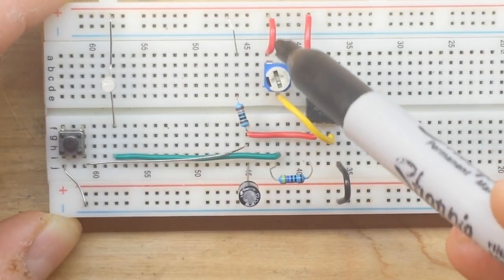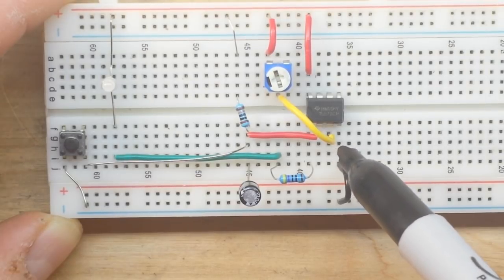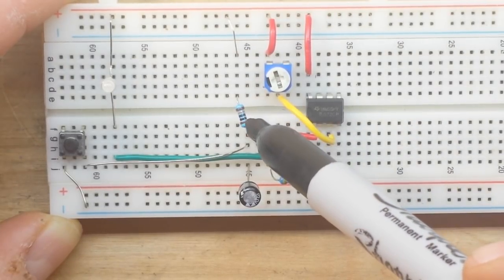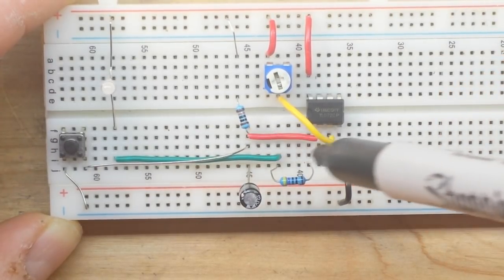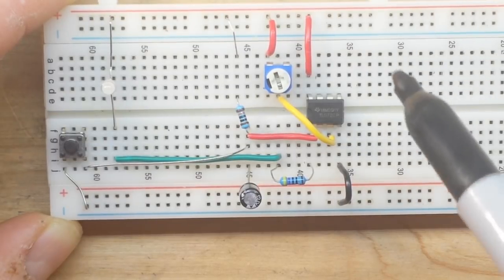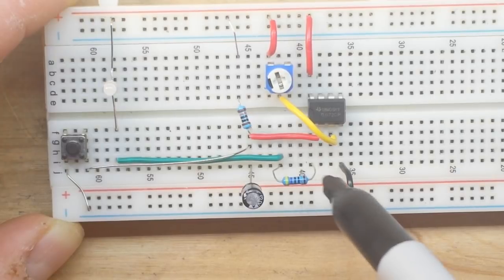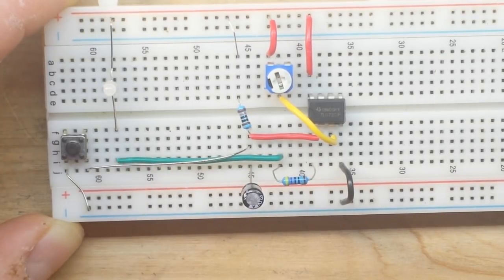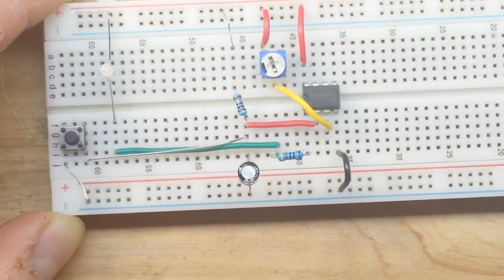So here is our V-ref coming into pin three, which is our non-inverting input. Here is our RC circuit. This is R1 and C1 at the junction there. They're coming into pin two, our inverting input, and then pin one is our output. There is a resistor there going over to our LED, and then we also have our reset switch.